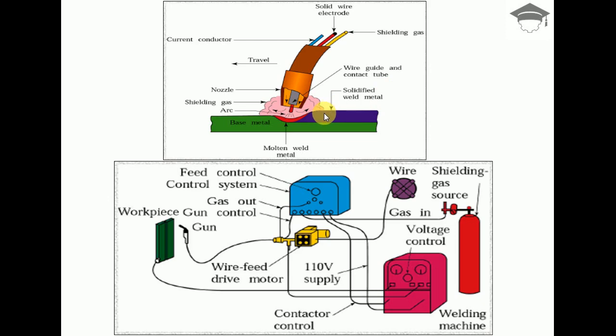Here we have a solid wire electrode. The electrode is in the form of a wire having an outer diameter of 0.035 inches up to 0.045 inches.